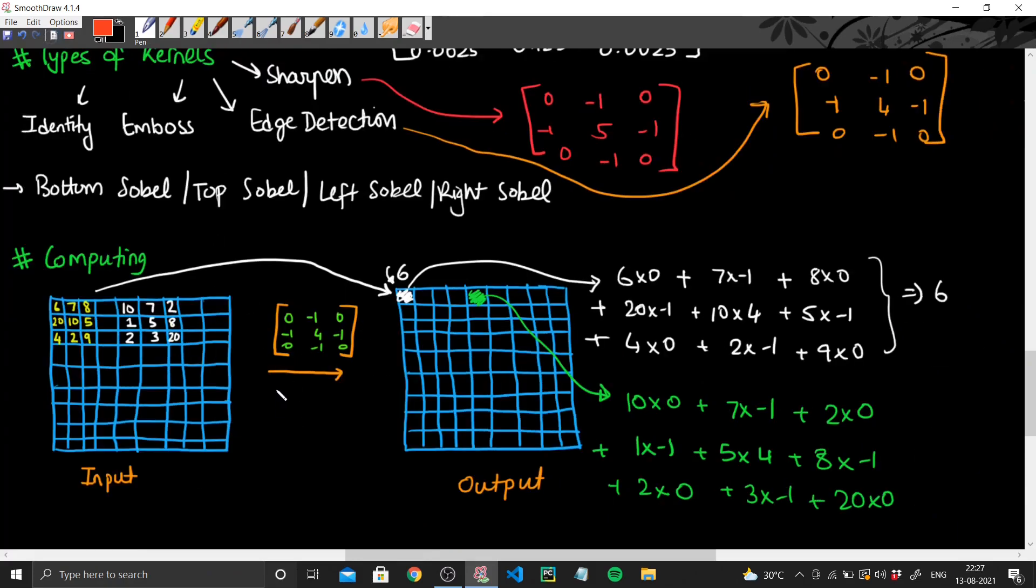So if we're using the sharpen one, I'll show that in red because I'll keep the consistency. If I use the sharpen one, you get 0, minus 1, 0, minus 1, 5, minus 1, 0, minus 1, 0. This is my sharpen as shown above, and this is the edge detection. So I'm doing all my calculations as edge detection.